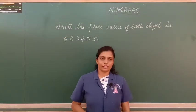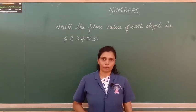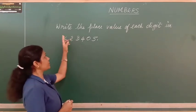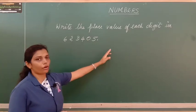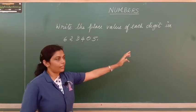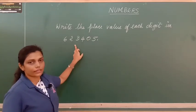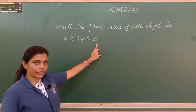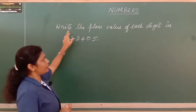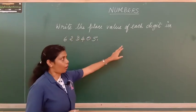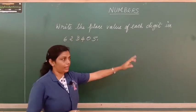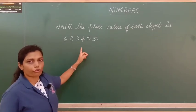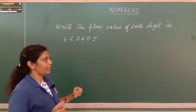Now children, let us solve some problems. The first problem is: write the place value of each digit in 6,23,405.